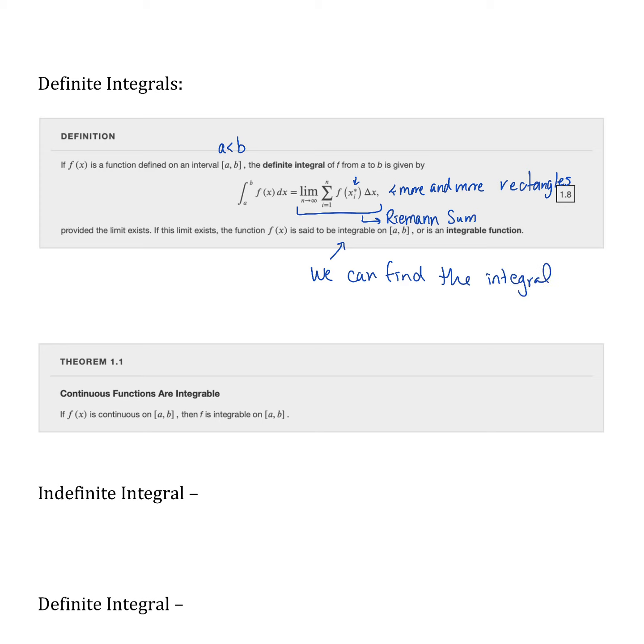Integrals are a lot more forgiving than derivatives. Theorem 1.1 shows that if you have a continuous function, then it's integrable. Some issues we had with derivatives—like when we had pointy parts of our function—the derivative wouldn't exist, but that function's continuous everywhere. It's all connected; I was able to draw it without lifting my pencil up. We don't have a derivative at that pointy part, but with an integral that's not a problem at all. All we need is for it to be continuous.